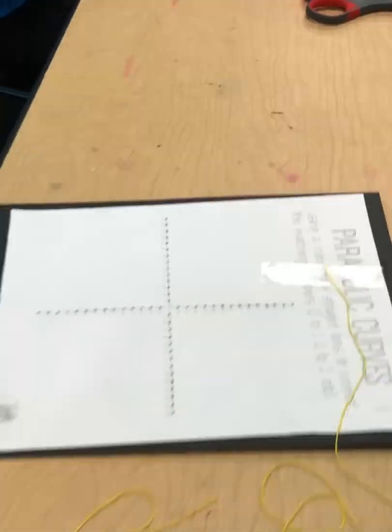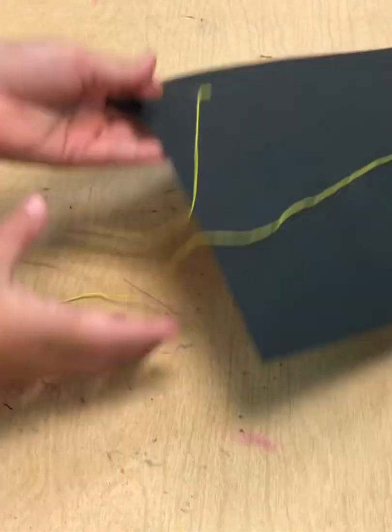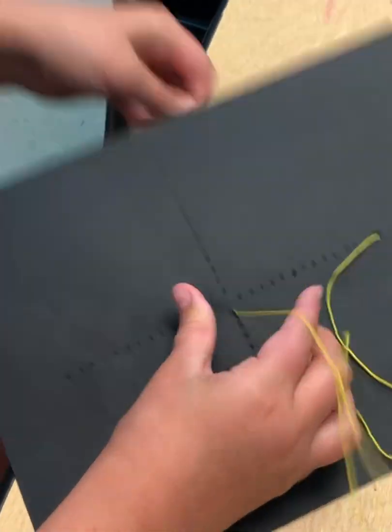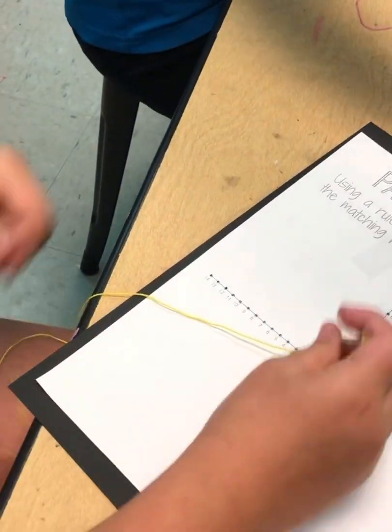Once needles are tied, students will then tape the loose end of their string onto their paper. That way, once they begin sewing and they pull the string through, it doesn't accidentally come all the way through the paper.